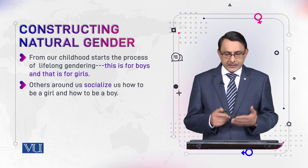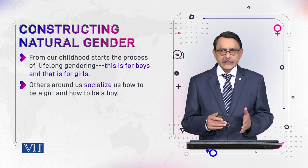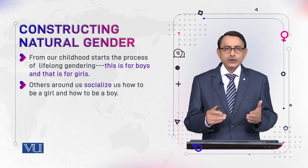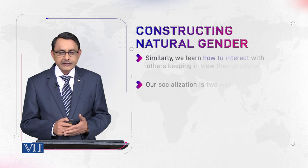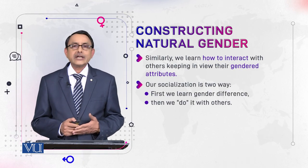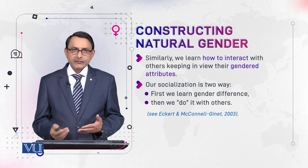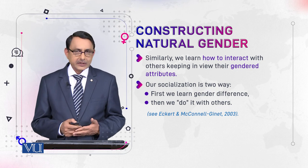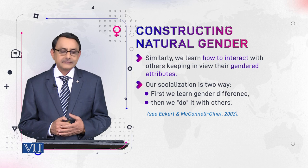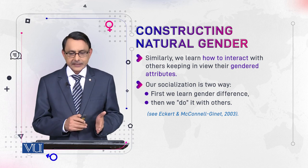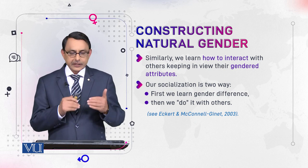Others around us socialize us — they unconsciously train and groom us in how to behave as a boy or as a girl. Similarly, we learn how to interact with others keeping in view their gendered attributes — how a boy meets a girl and how a girl meets a boy. This is learned through socialization at home. It is a two-way socialization: first we learn gender difference from our parents and elders, then we continue it with others.